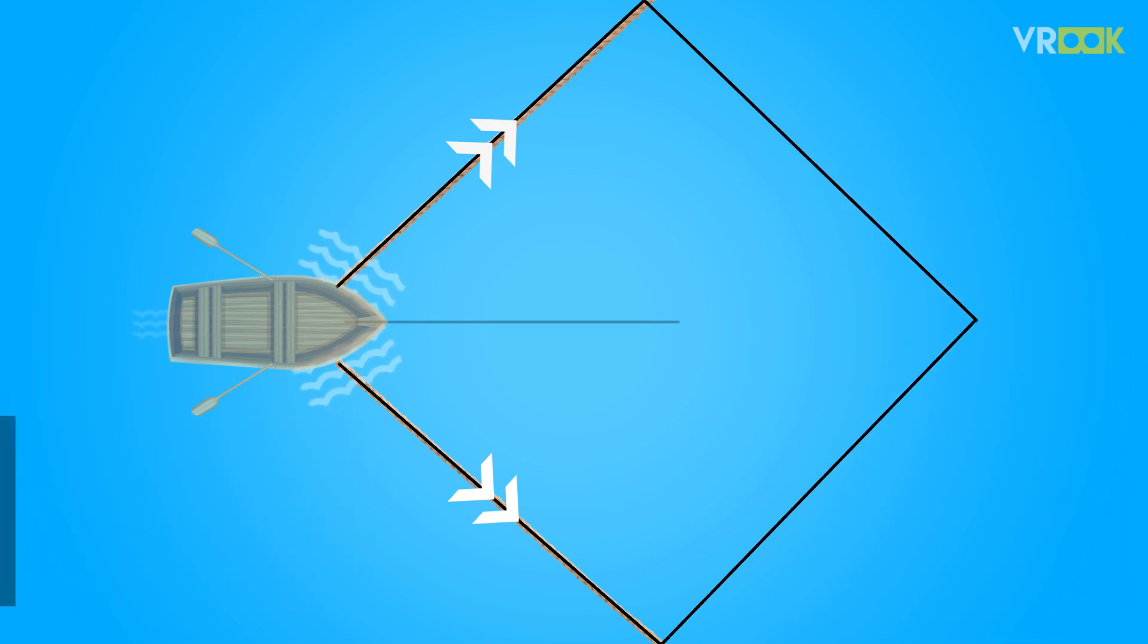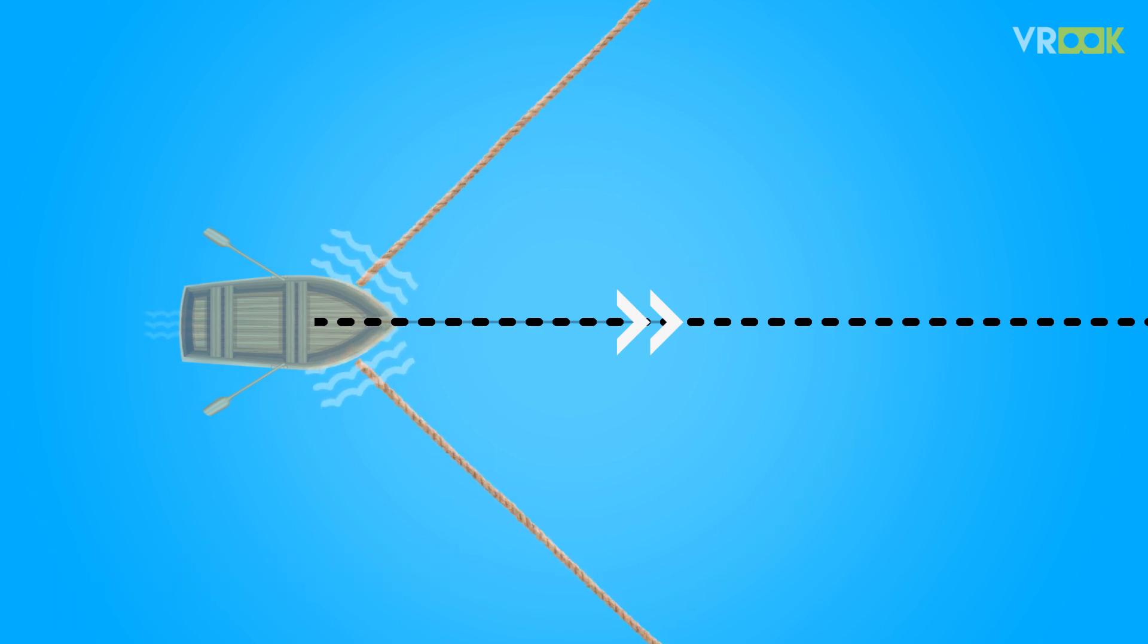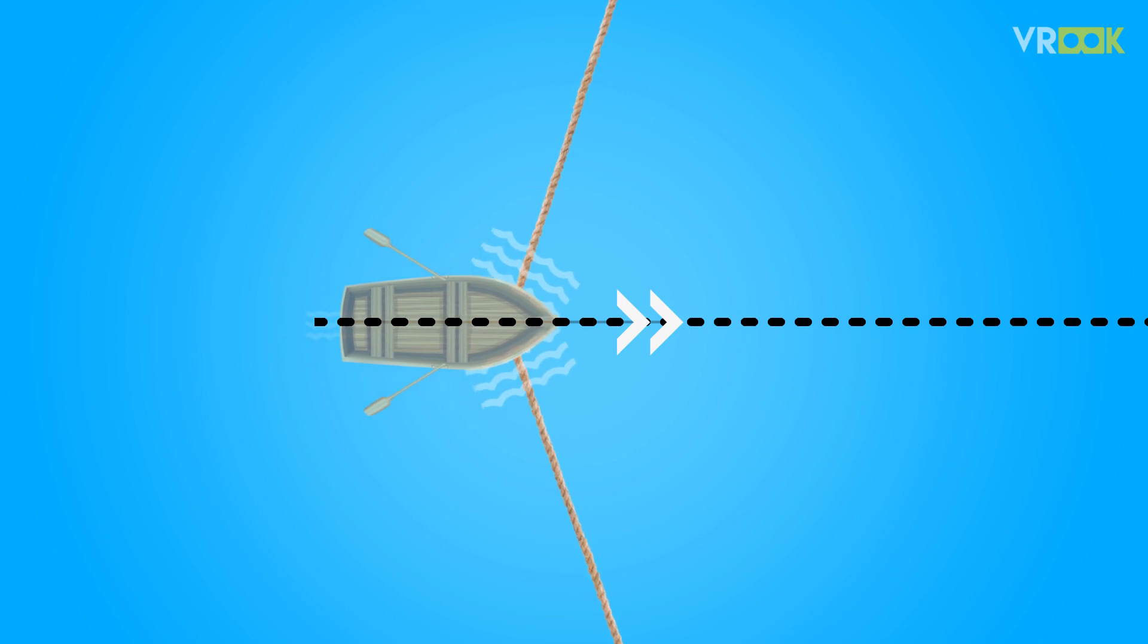You can join these forces and make a square, then the diagonal will give you the resultant of these forces. So the boat will experience the net force in the direction of the resultant and move in that direction.